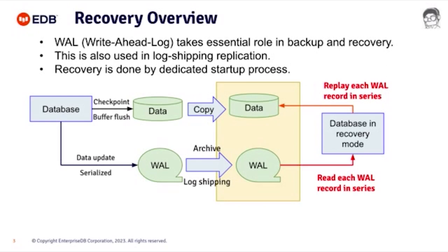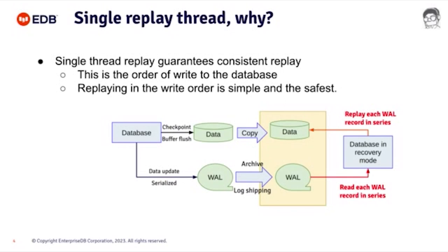We copy the data file as a backup or as a log-shipping standby, and we archive or hold the whole WAL. Then recovery happens to apply this WAL back to the data. At present, we are doing this in a strictly serial manner. The WAL can be written by multiple backends in parallel, but at recovery we have to replay it in a strictly serialized manner, because it is the simplest and safest approach. Postgres has had recovery for maybe more than 20 years.